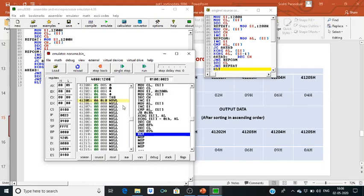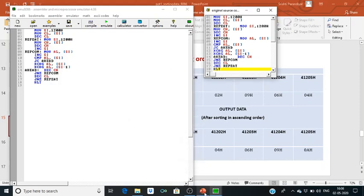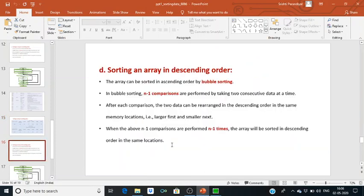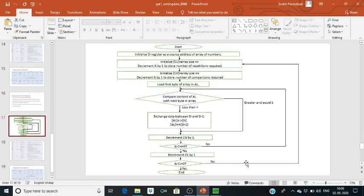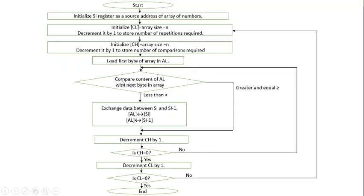For descending order, we do the same process except after each comparison the two data are rearranged in descending order in the same memory locations — larger data first and smaller in the next. We still perform n minus one comparisons n minus one times. The flowchart steps are the same; the only difference is in the comparison condition: if AL is less than the next byte, we swap the data; if greater than or equal to, we go to decrement the number of comparisons.